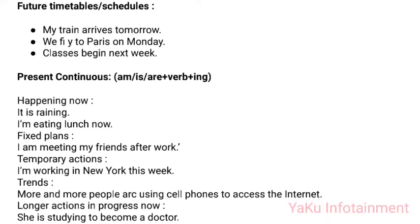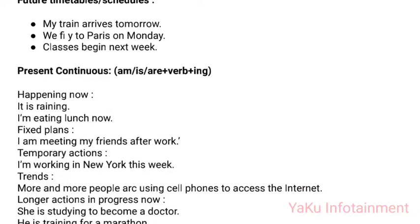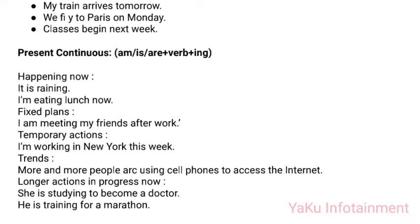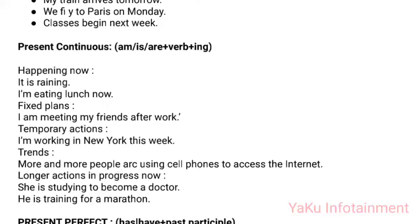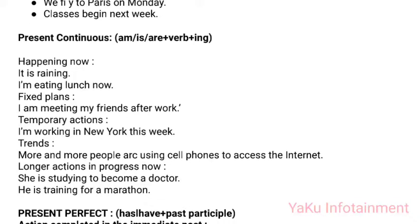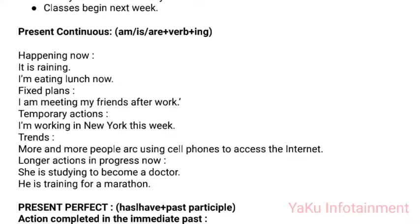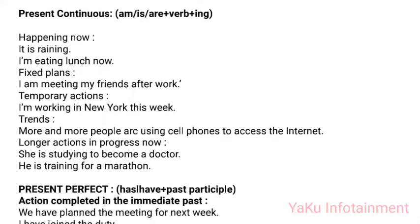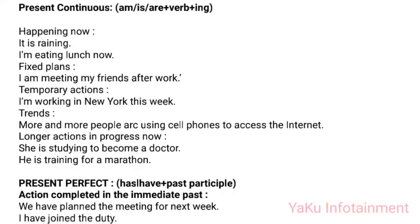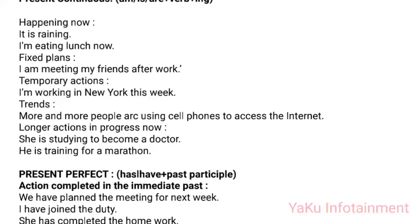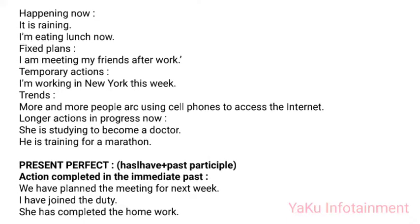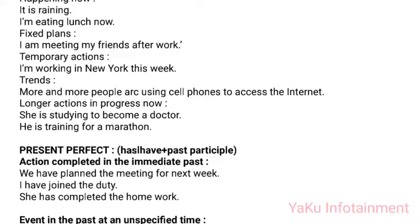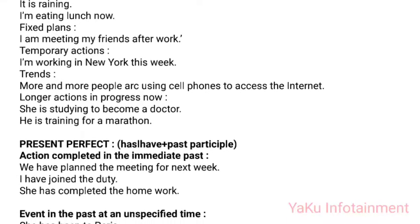Simple Present for future timetables: 'My train arrives tomorrow,' 'We will fly to Paris on Monday,' 'Classes begin next week.' Present Continuous (am/is/are + verb-ing): (1) Happening now: 'It is raining,' 'I'm eating lunch now.' (2) Fixed plans: 'I am meeting my friends after work.' (3) Temporary actions: 'I'm working in New York this week.' (4) Trends: 'More and more people are using cell phones to access the internet.' (5) Longer actions in progress: 'She is studying to become a doctor,' 'He is training for a marathon.'